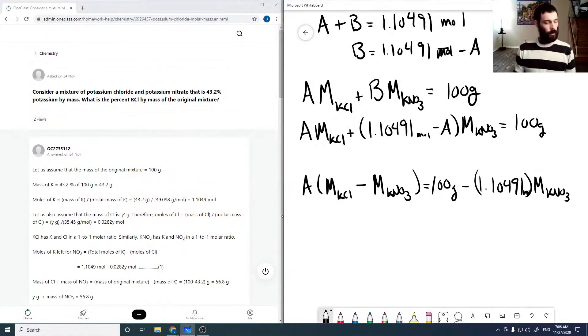Putting in values here now, so this is A times 74.55—I'm just going to start cutting these down a bit, so rather than keeping all those units—minus 101.10.